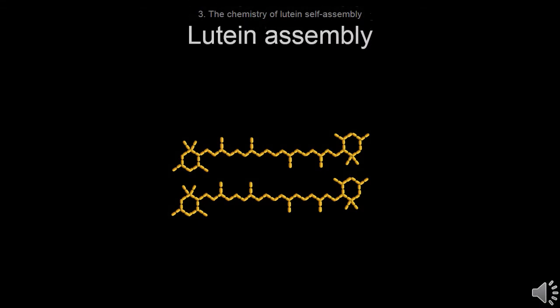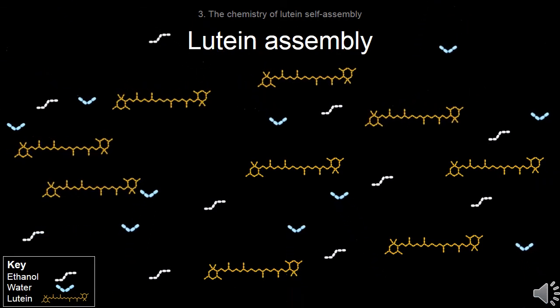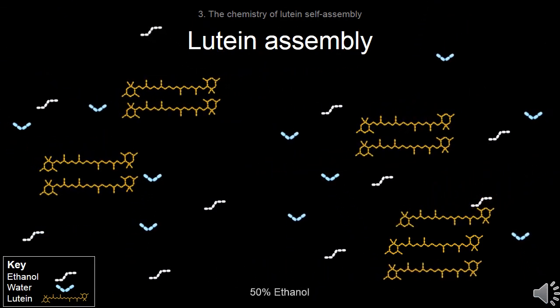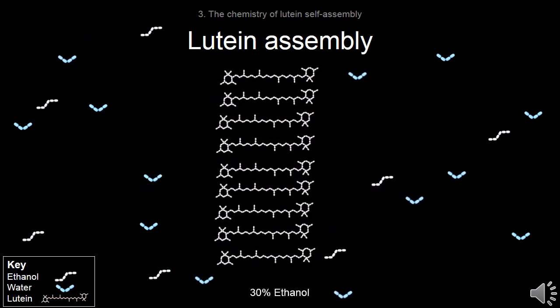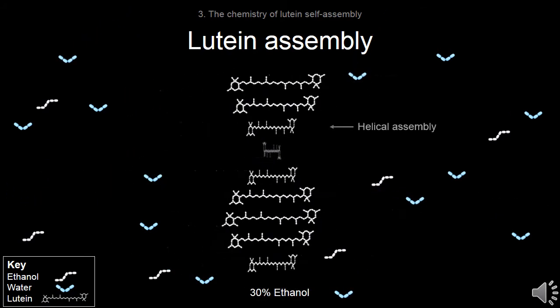In hydrocarbon solvents, lutein molecules do not interact. As water is added, they begin to associate and stop absorbing blue light. With more water, larger aggregates are formed which absorb ultraviolet light and have a helical structure.